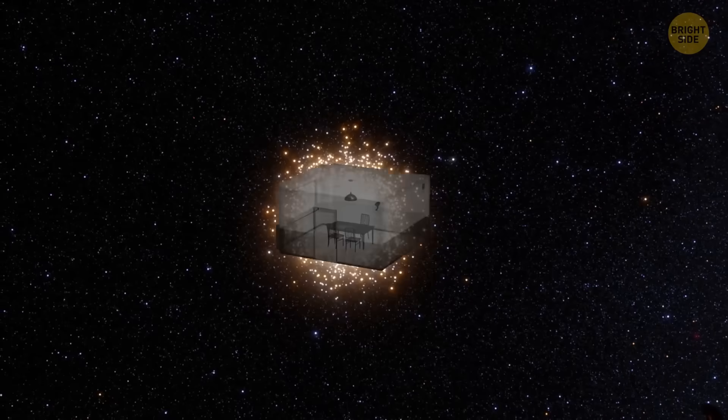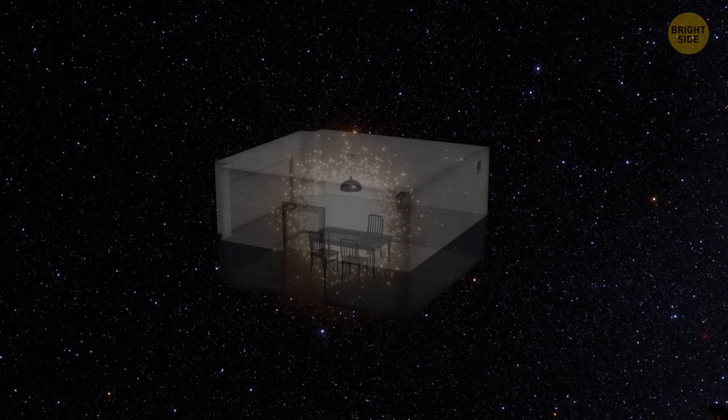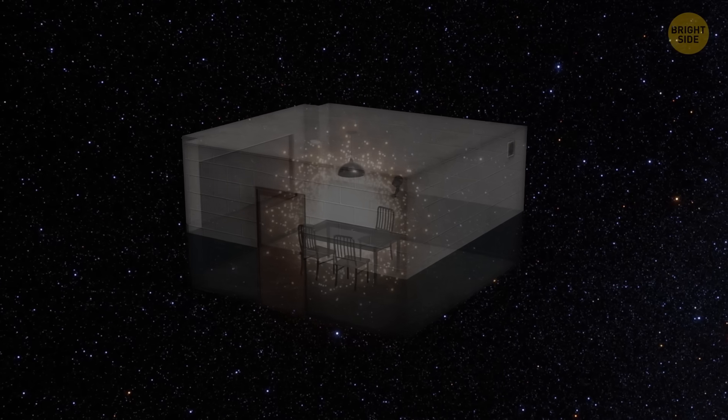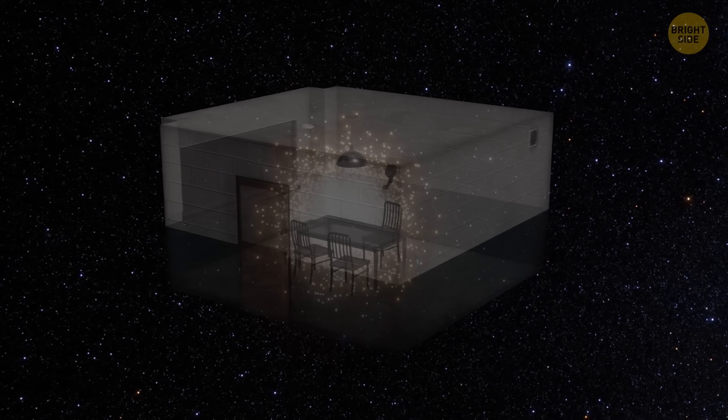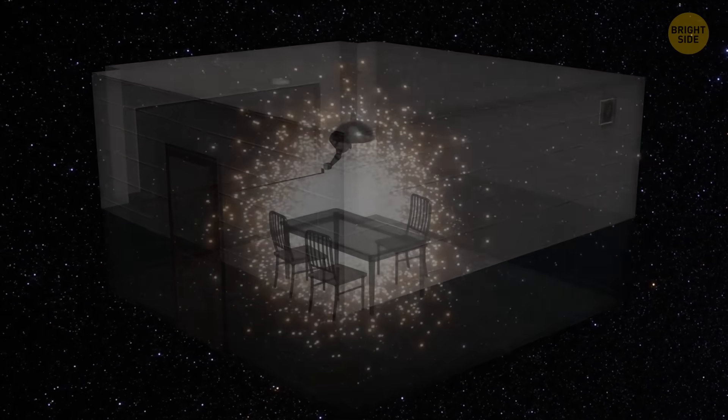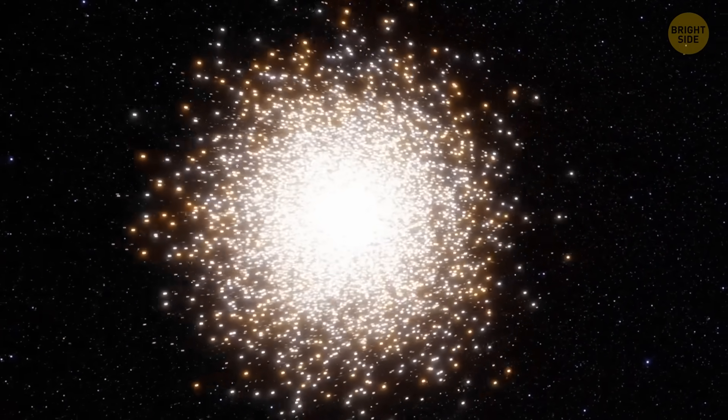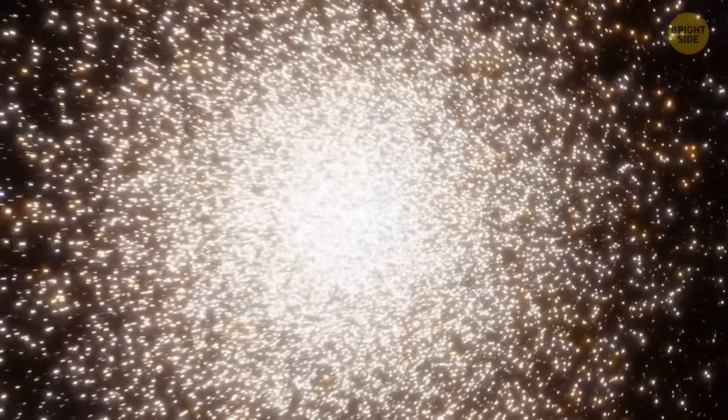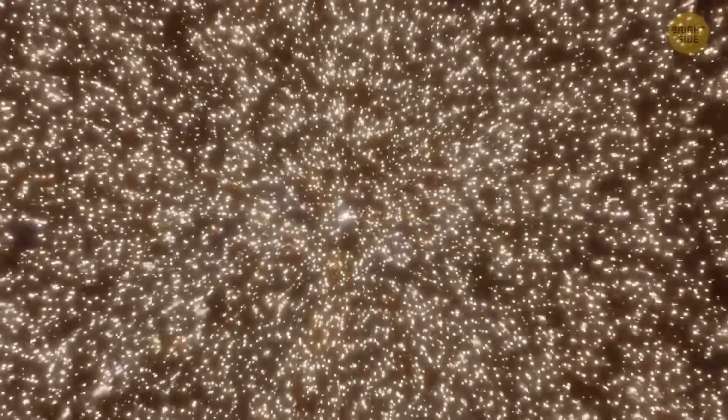Imagine standing in a huge, quiet room. That's like space near our solar system. Now imagine that same room completely jam-packed with the whole population of a very large country. Super crowded. That's what the inside of a little red dot might be like. It could be one of the most crowded places in the universe. Scientists aren't even sure galaxies this packed can really exist.